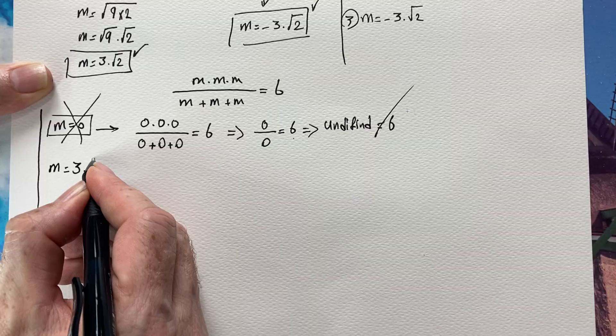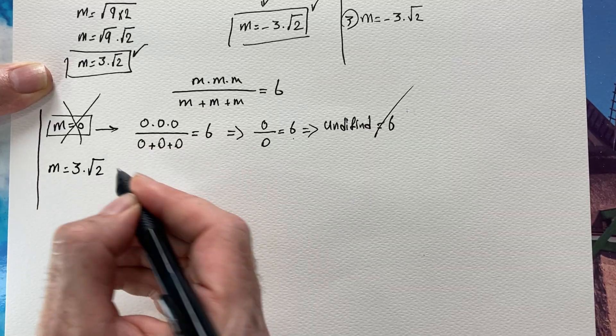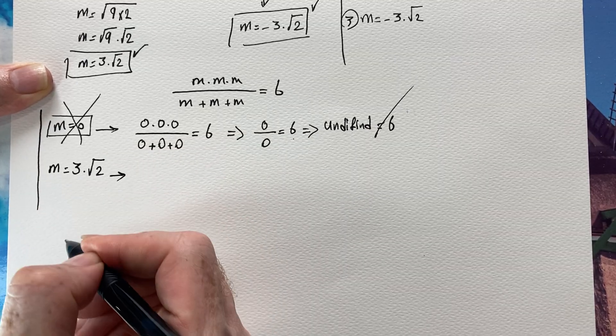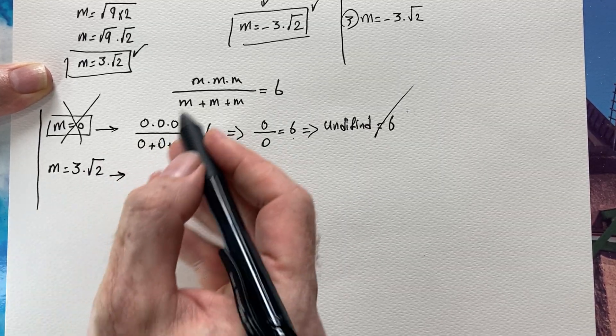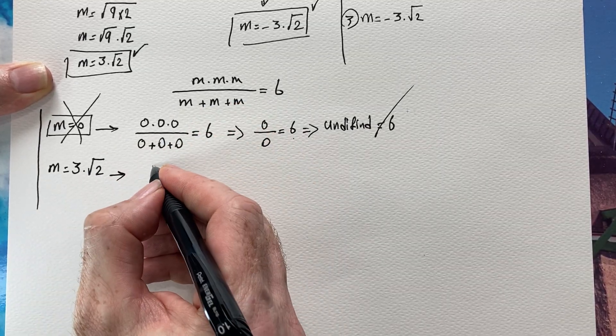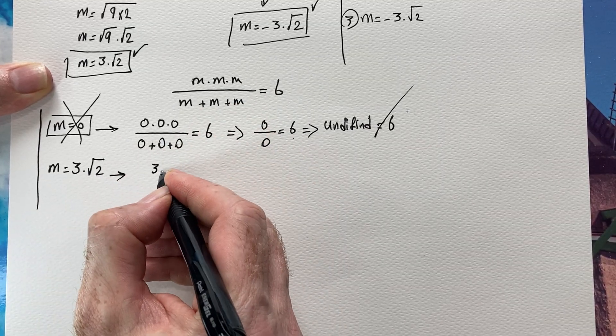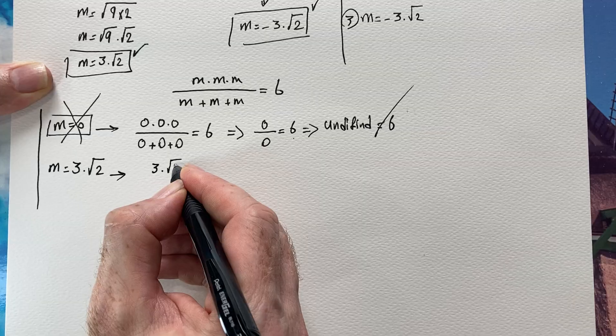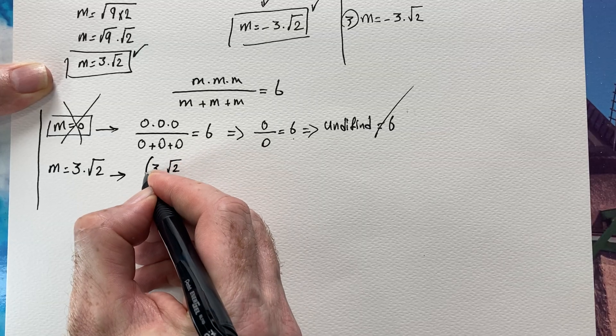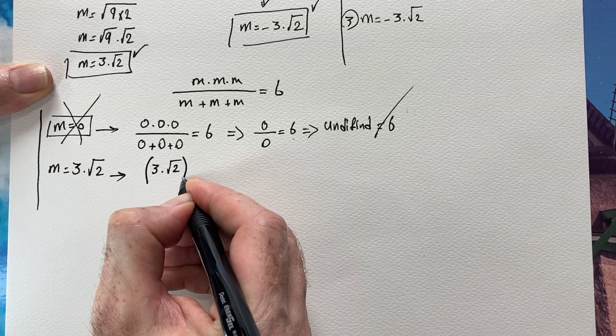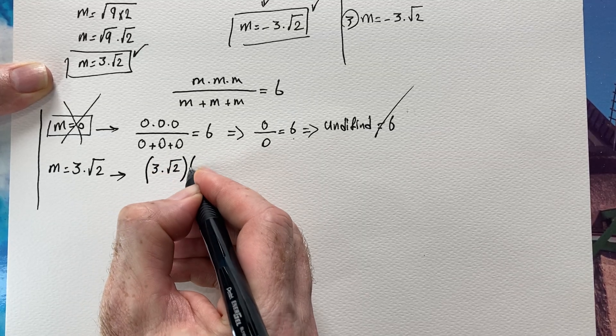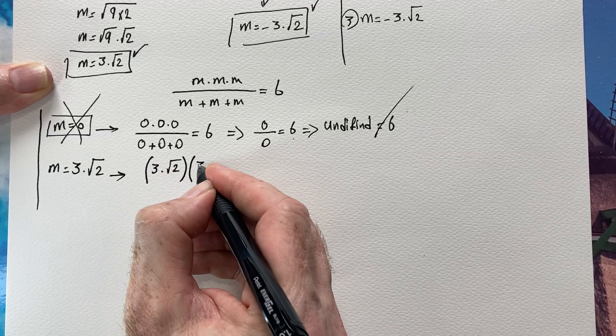Next, checking m equals 3√2: let's plug it into the original equation — 3√2 times 3√2 times 3√2 on the numerator.